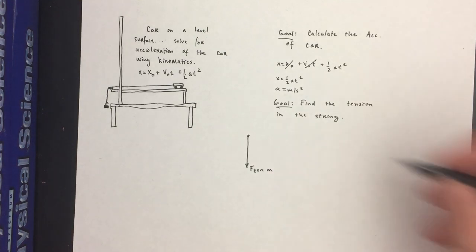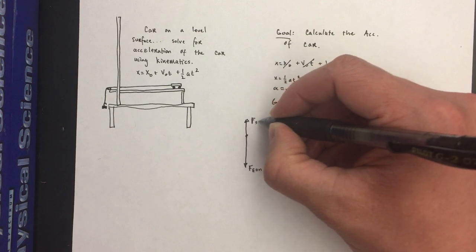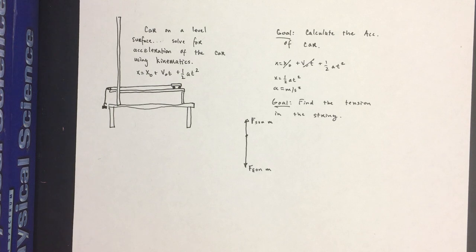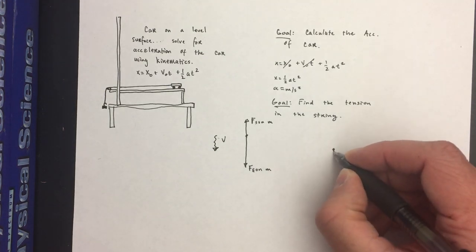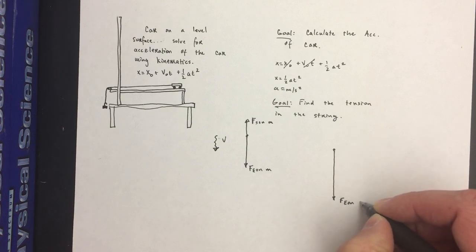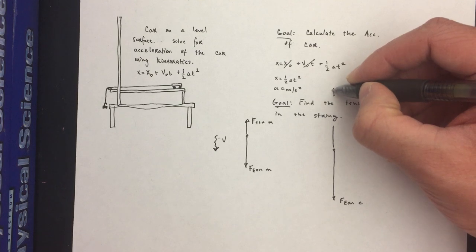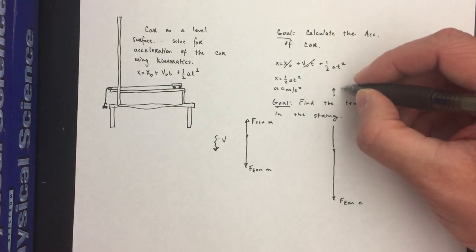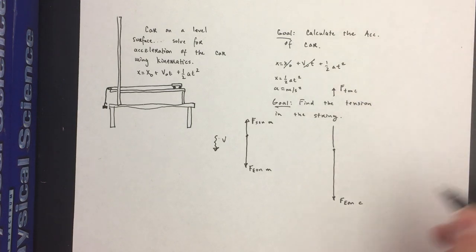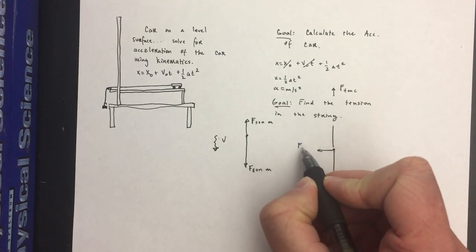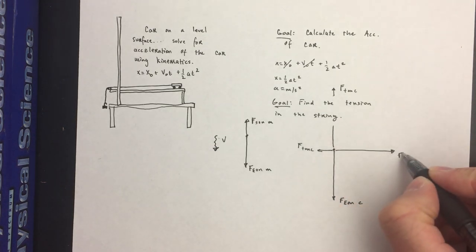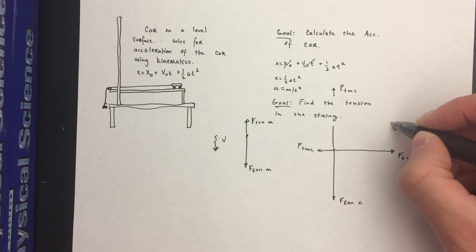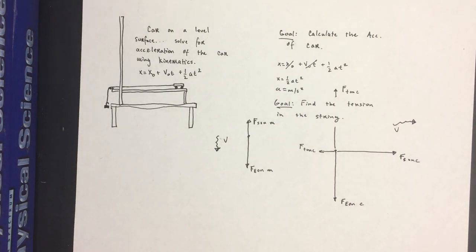First, the system that includes the hanging mass: the force of the earth on the mass moving downward was greater than the force of the string on the mass pointing upward, because the mass accelerated in the downward direction. Our other system was the car: I drew the force-of-earth arrow bigger to show it was likely larger than the hanging mass force. We also have friction from the track in the backward direction and a larger tension force pulling the car forward.